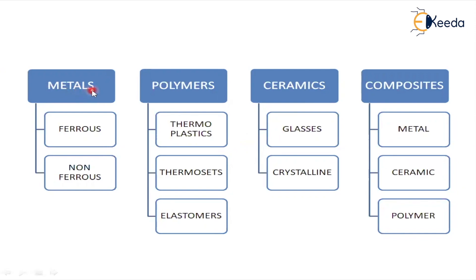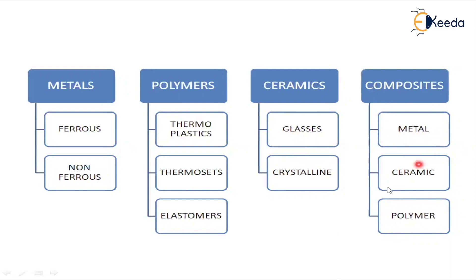Metals are sub-classified as ferrous and non-ferrous. Polymers are sub-classified as thermoplastics, thermosets, and elastomers. Ceramics are sub-classified as glasses and crystalline. Composites are sub-classified as metal matrix composites, ceramic composites, and polymer matrix composites.